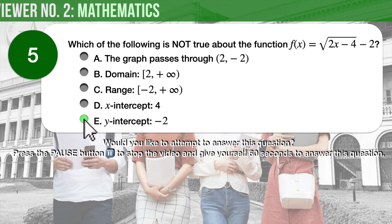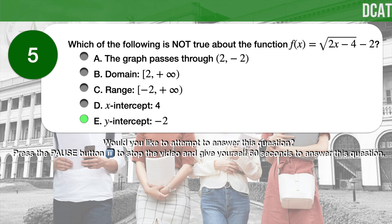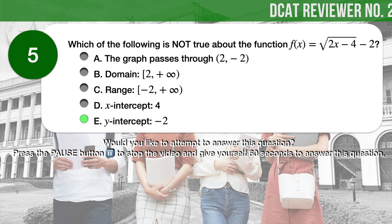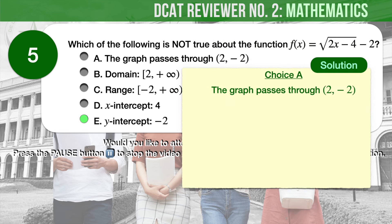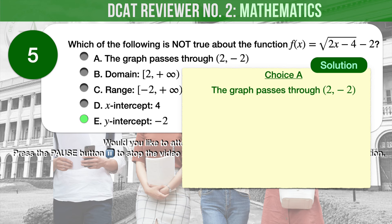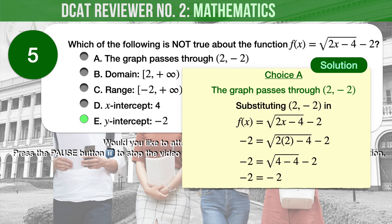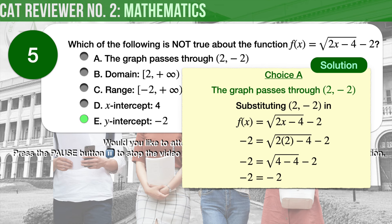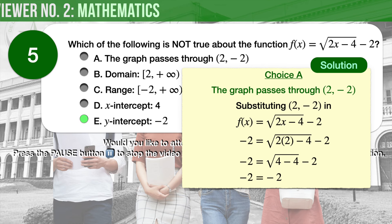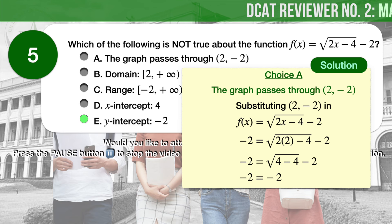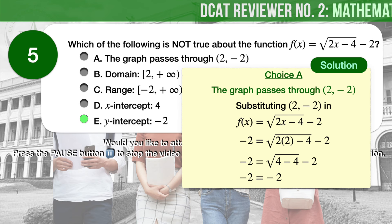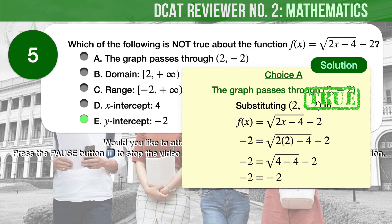The correct answer is E — that the y-intercept is negative 2 — is not true. Let's examine each answer choice. Choice A: the graph passes through the point (2, negative 2). Since f(x) equals y, with x equals 2, the square root of the quantity 2x minus 4, minus 2, also results in negative 2. Therefore, the statement in option A is true.